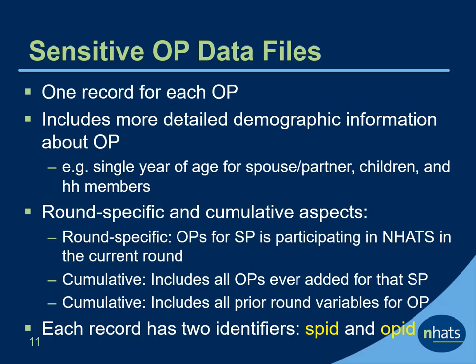The sensitive OP data files include one record for each OP. The file includes more detailed demographic information about OPs, including single year of age for spouse and partners, children, and household members. Just like the public OP files, the sensitive files have round specific and cumulative aspects. OP records are limited to those for which the SP is participating in the current NHATS round. All OPs ever added for that SP are included, and all prior sensitive data variables for a given OP are included.